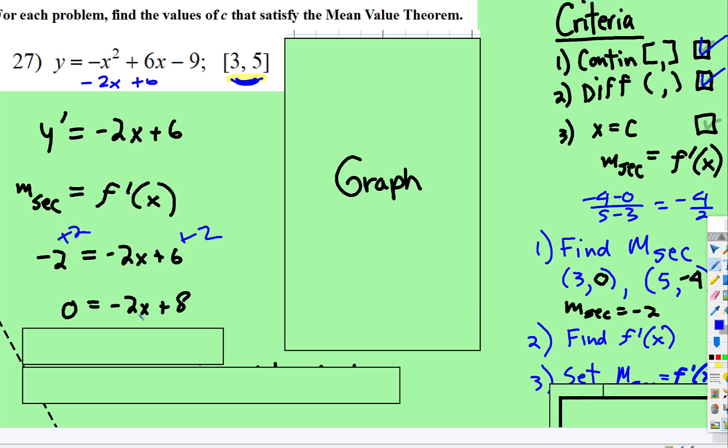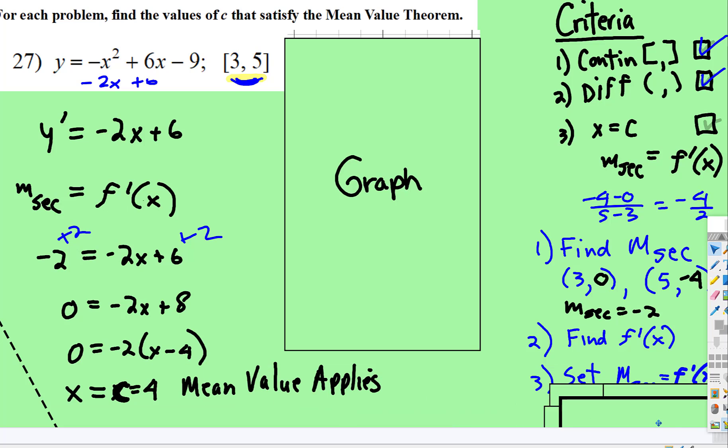Factor out what they have in common. I'm going to factor out a -2, which leaves x - 4. And now we know what our x value should be. Our x value where x = 4, well whatever x is, that's what the c will equal. So where x = 4, the tangent line at that point should be parallel to the secant line.